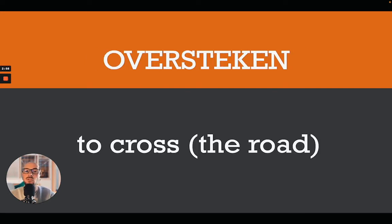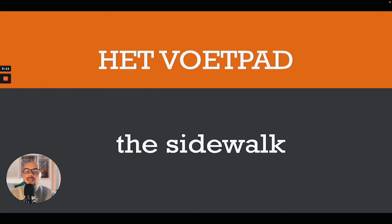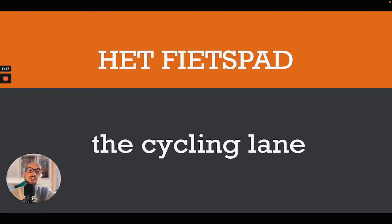Then we have 'oversteken' — that would be to cross. In the context of traffic, that would be to cross the road. 'De straat oversteken' — to cross the road. And then of course the sidewalk, which would be 'het voetpad.' 'Het voetpad' — that would be your sidewalk. Very popular word in both the Netherlands and Belgium.